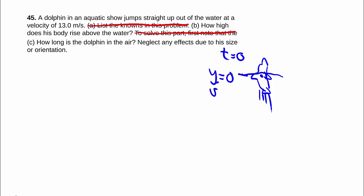And we know at this point, y0 is zero, v0 is 13 meters per second, which seems fairly fast, but dolphins are fast swimmers, so why not? So they're asking, how high does this body rise above the water?